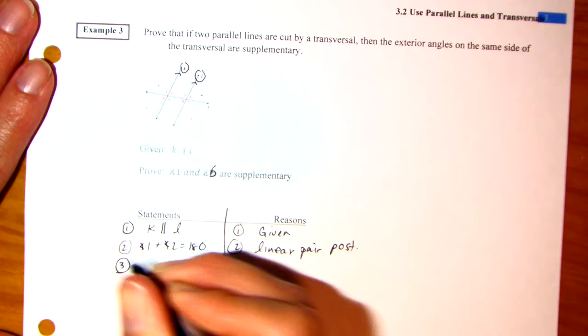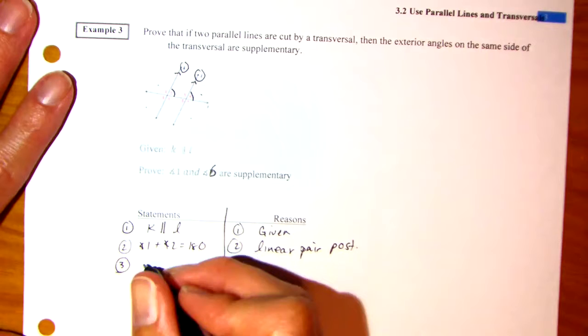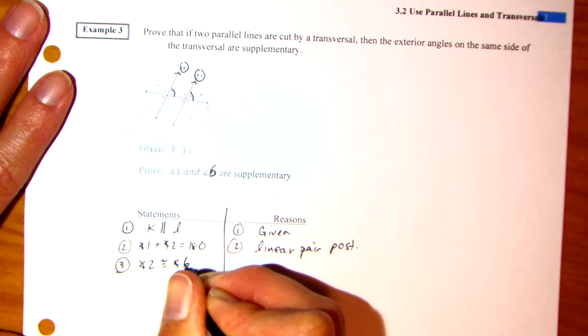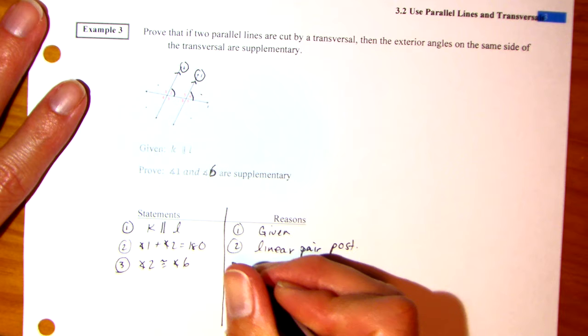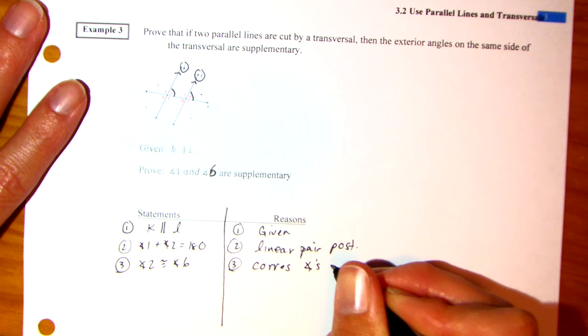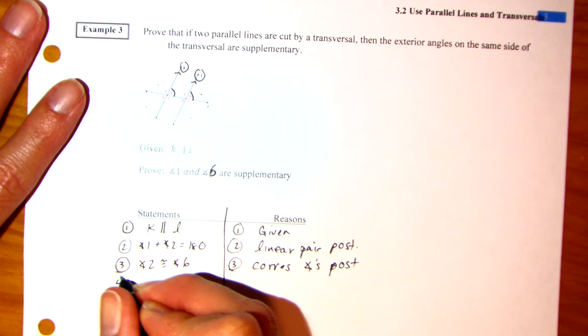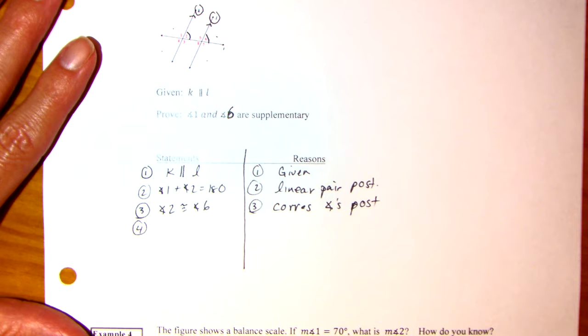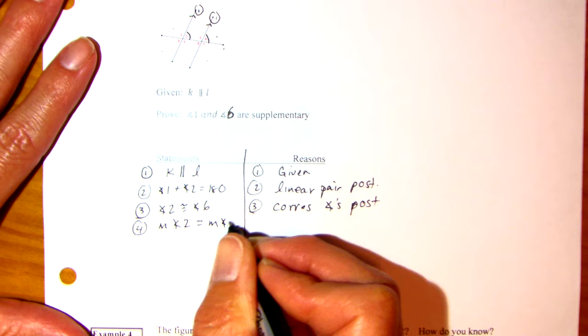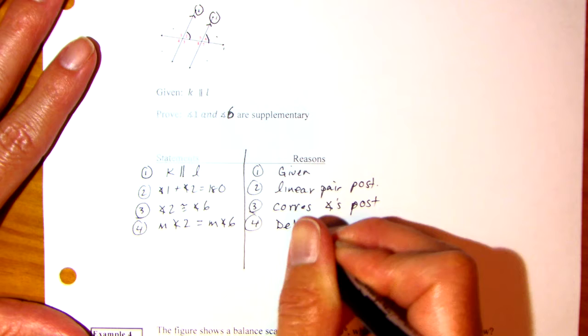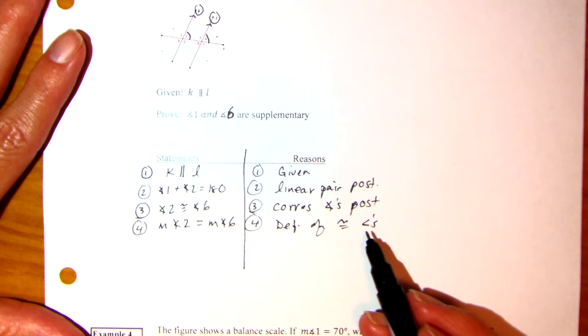Now, number 3. I know that angle 2 and angle 6 are congruent. Why? Angle 2 is congruent to angle 6. Well, the lines are parallel. And, what are those two angles called? Corresponding angles. Corresponding angles postulate. Now, if the angles are congruent, I know their measures are the same. This is one of the steps that I've always hated doing. To me, it was always obvious. So, the measure of angle 2 is equal to the measure of angle 6. Definition of congruent angles. Definition of congruent angles says congruent angles have the same measure.